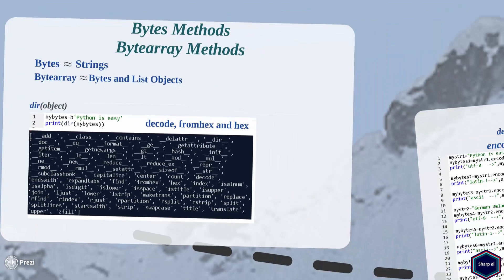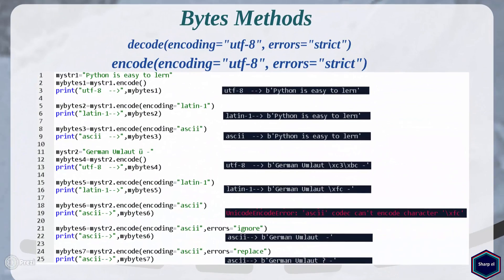Let's start with the decode method. For a better understanding of decode, let's first look at the encode method of the string class. The encode method converts a string object into a bytes object. It takes two optional arguments, encoding and errors, and by default the encoding argument is set to UTF-8 and the errors argument to strict. In this example I have string mystring1 and I call encode method, which converts mystring1 into a bytes object using UTF-8 encoding by default.